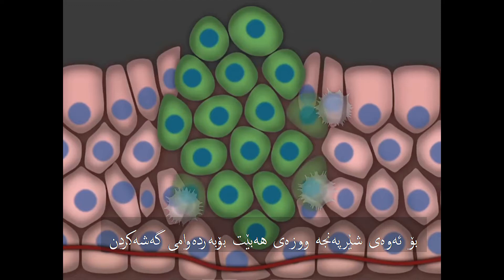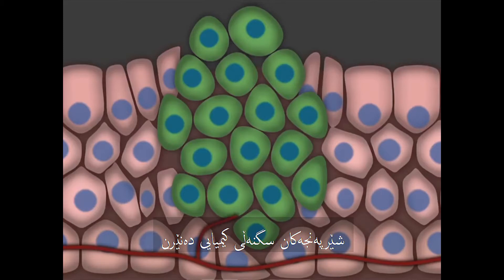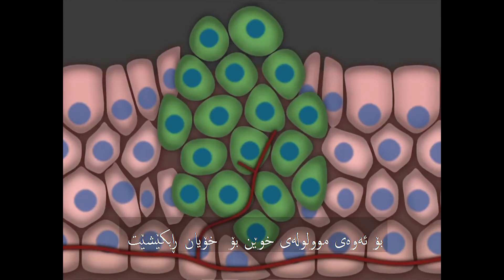To have the energy to keep growing, the cancer needs a blood supply. To get that supply, the cancer sends out chemical signals that draw blood vessels to it.